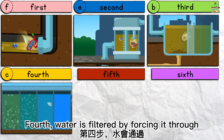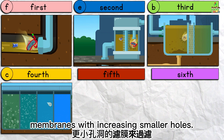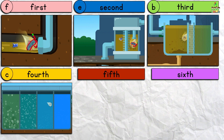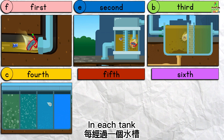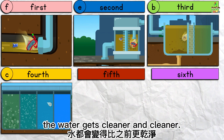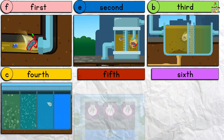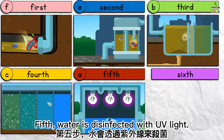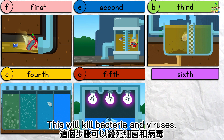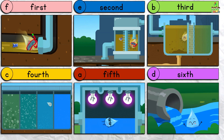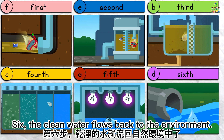Fourth, water is filtered by forcing it through membranes with increasingly smaller holes. In each tank, the water gets cleaner and cleaner. Fifth, water is disinfected with UV light. This will kill bacteria and viruses. Sixth, the clean water flows back to the environment.